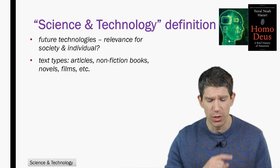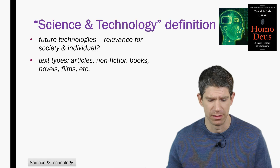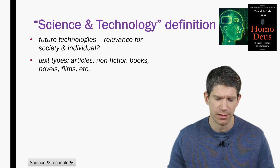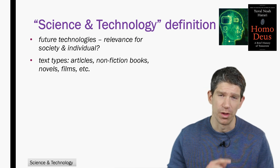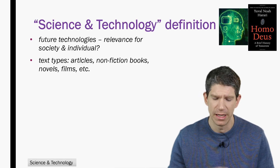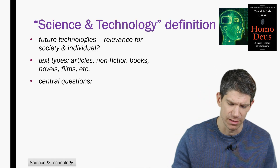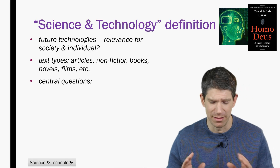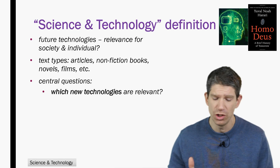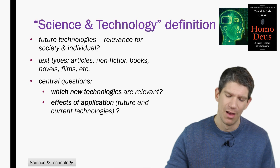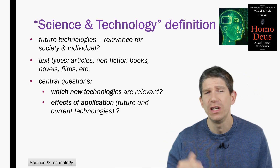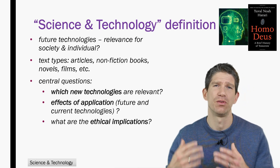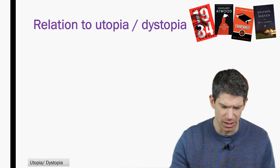There are different text types we can work with. We can read newspaper articles about this, or non-fictional books such as Homo Deus. But we can also work with utopias and dystopias — novels usually, but of course they can also be films. These central questions run through all of them: Which new technologies are relevant? What are the effects if they are applied on a large scale for our society? And what are the ethical implications we have to think about?